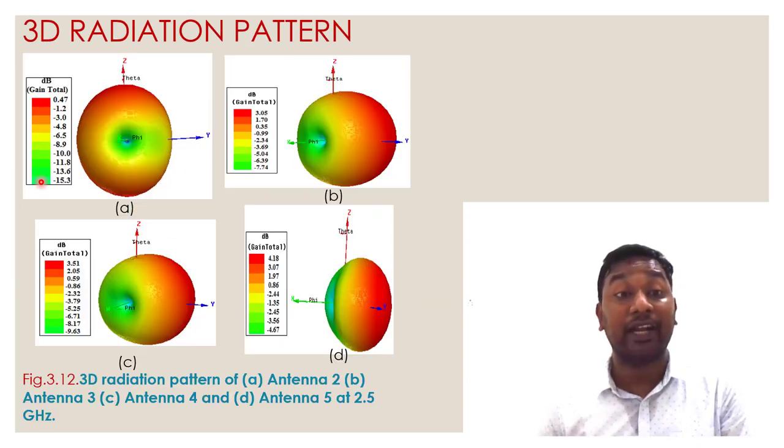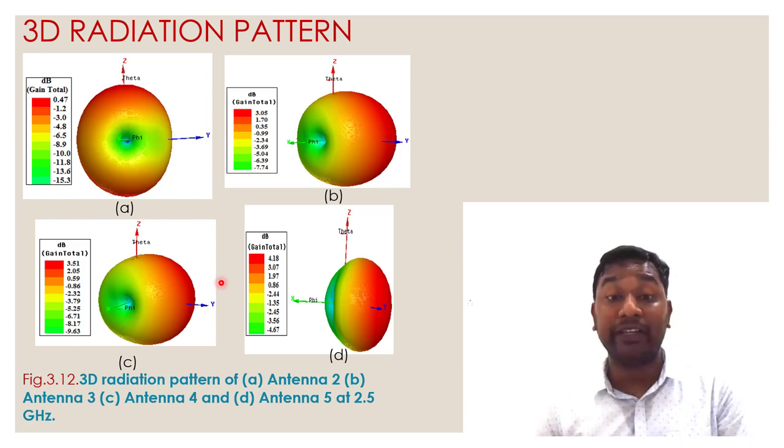In radiation pattern we will see the property of the metamaterial elaborately. When we see first antenna working, it radiates in all directions. But after using metamaterial, that is three cross three pattern, the antenna radiates in a particular direction.